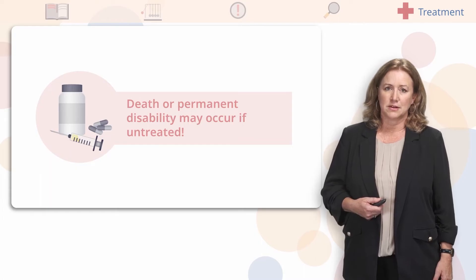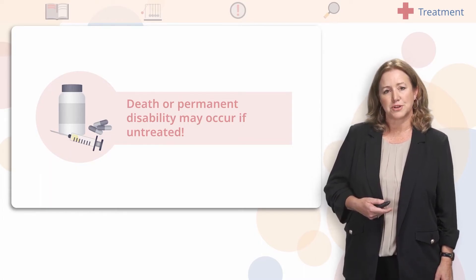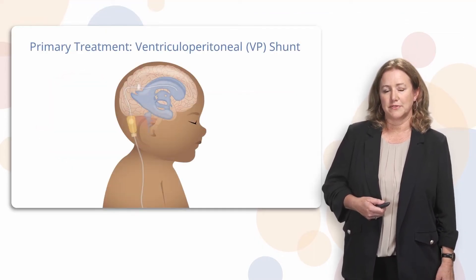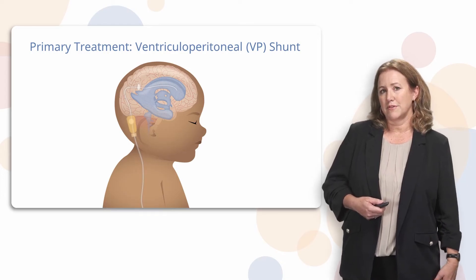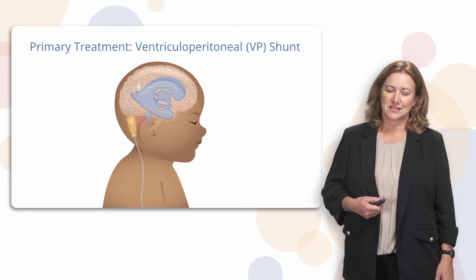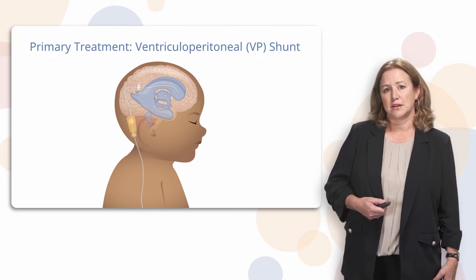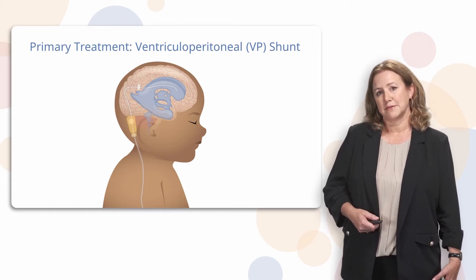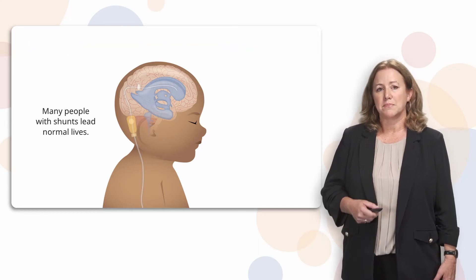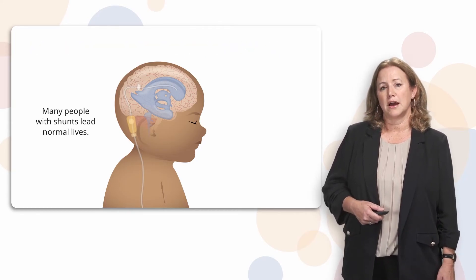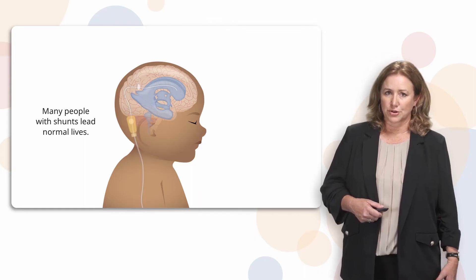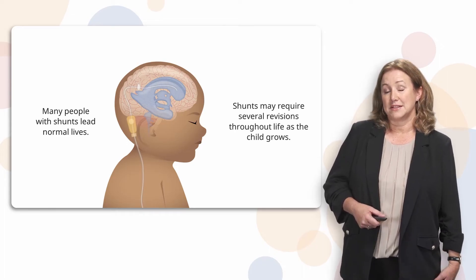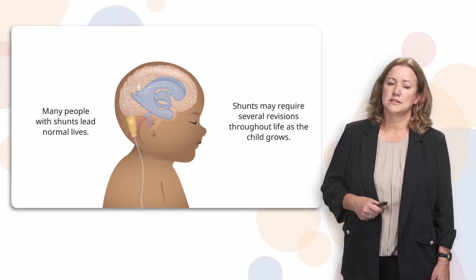Let's review the major treatment for hydrocephalus. Without treatment, death or permanent disability can occur. The main treatment for hydrocephalus is a VP shunt — the long word for that is ventricular peritoneal shunt. That name is basically representative of how it goes through the body, from the ventricles of the brain down to the peritoneum of the abdomen, or the peritoneal space. Many people with shunts lead normal, healthy lives. These shunts are internal — they're inside the body, none of it is on the outside. The only downside is that they may require some revisions throughout life as the child grows.